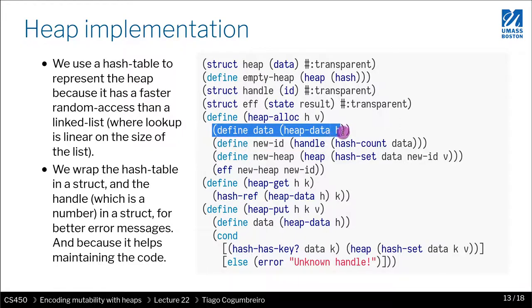First, we take the data, so the hash table, from the heap. Then what we need to do is we need to create a new handle that is unique. And the way we're doing this is by creating a new number that is always the biggest number in the heap. And we're doing it continuously.